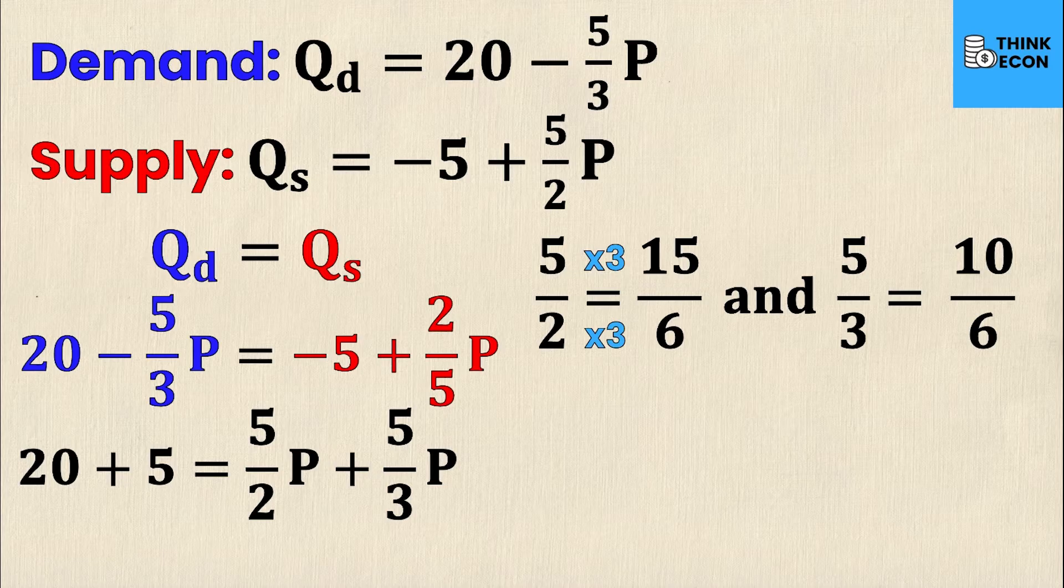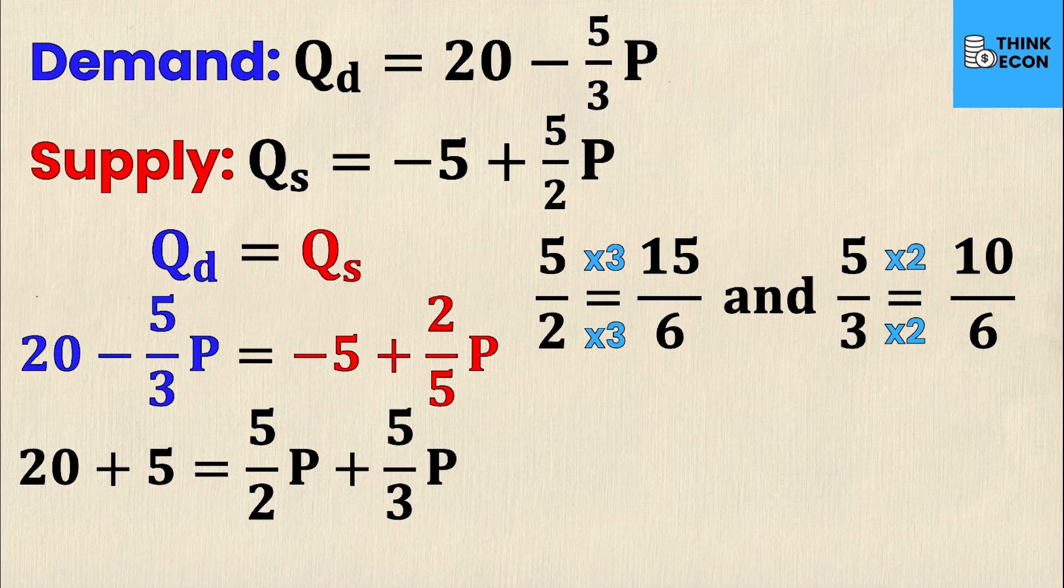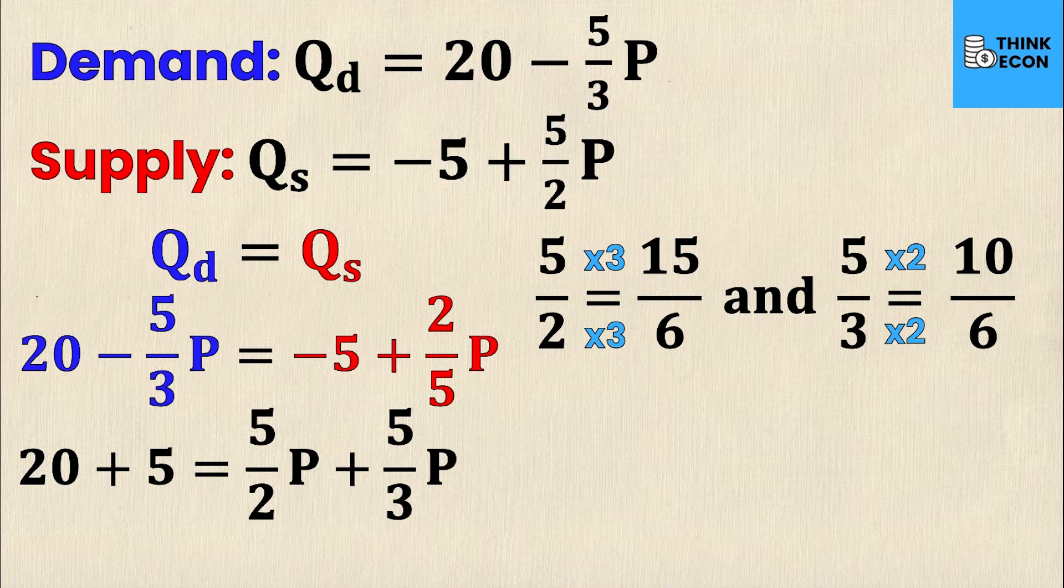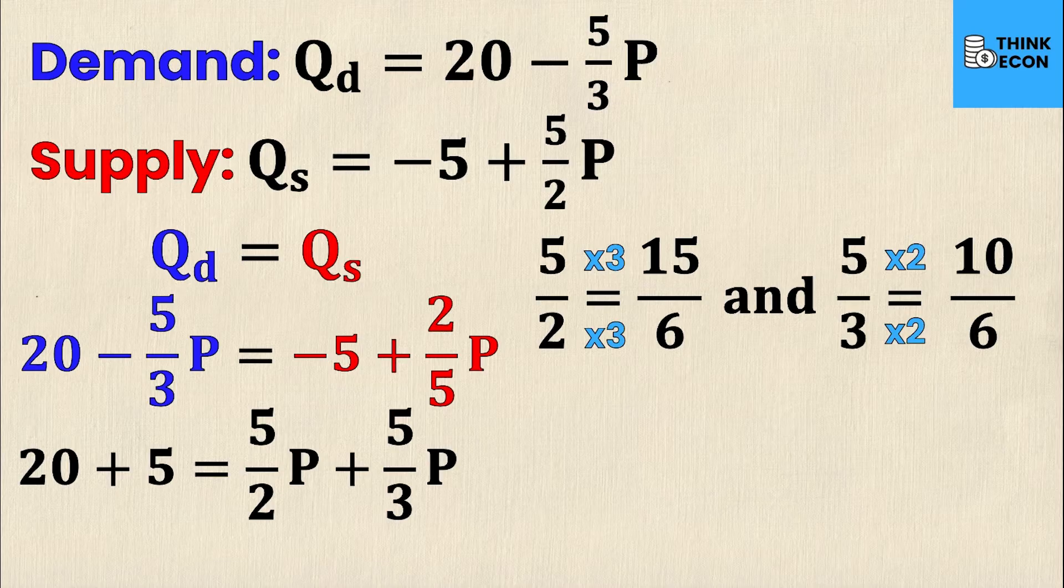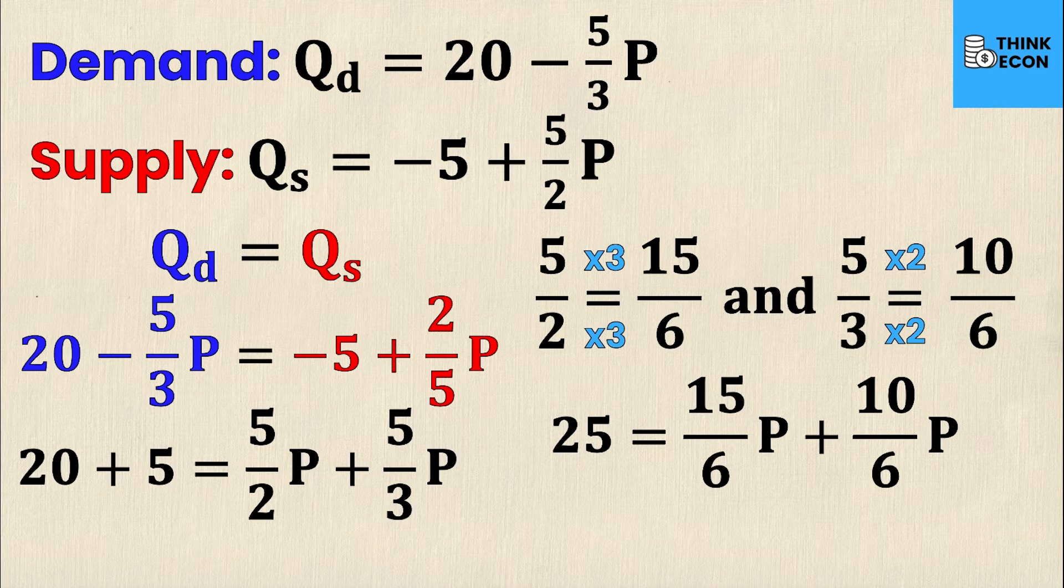Similarly, to get 5 thirds into 10 sixths, I multiply the denominator by 2. 3 times 2 is 6, and therefore I must multiply the numerator by 2 as well. 5 times 2 is 10. So these fractions are the exact same fractions, they're just 3 times greater. If 15 over 6 and 10 over 6 were reduced, they would go back to 5 over 2 and 5 over 3. I'm going to rewrite the previous line with the denominators as 6.